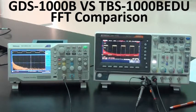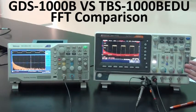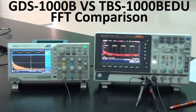Good day. I'm very pleased to demonstrate the waveform display comparison between GW Instac GDS-1000B oscilloscope and Tektronik TBS-1000EDU oscilloscope while using FFT mathematical function. On your right is GDS-1000B oscilloscope, the newly developed oscilloscope by GW Instac.